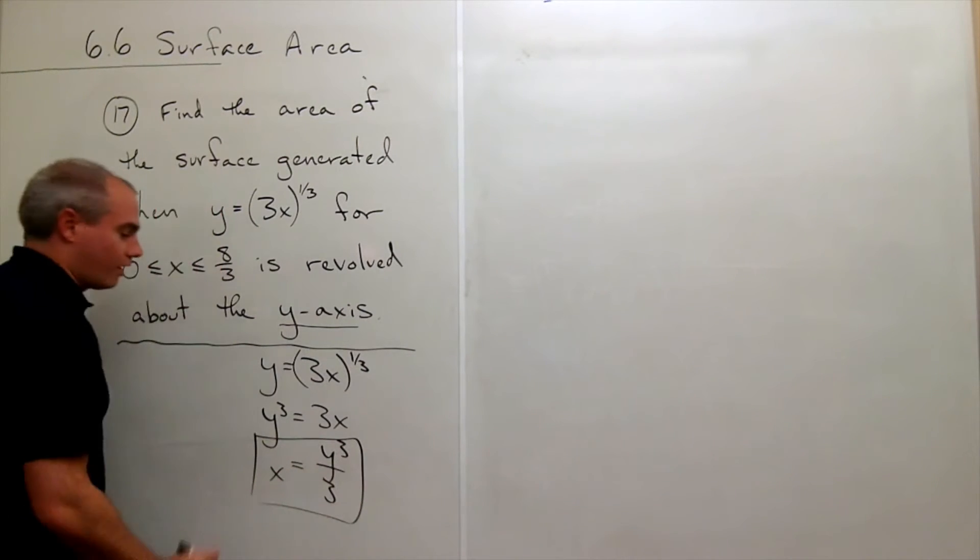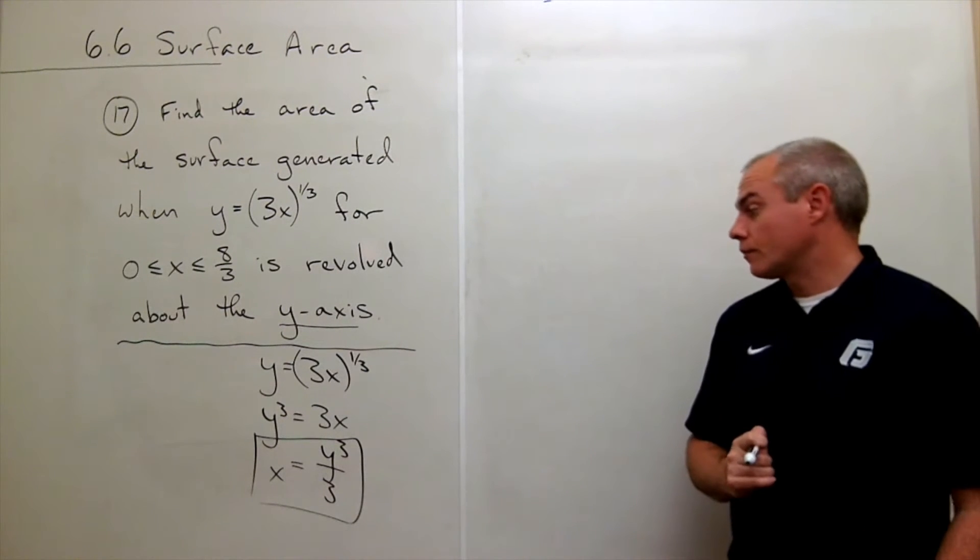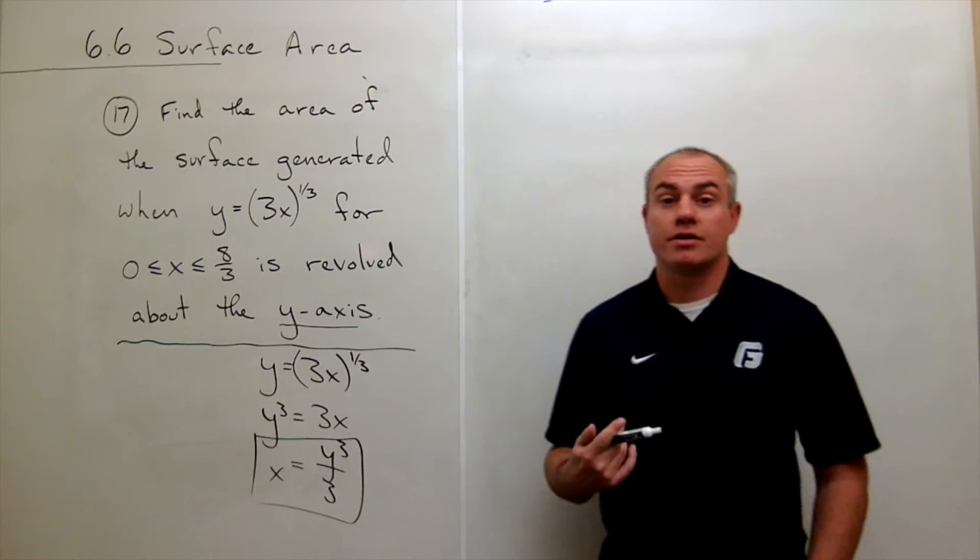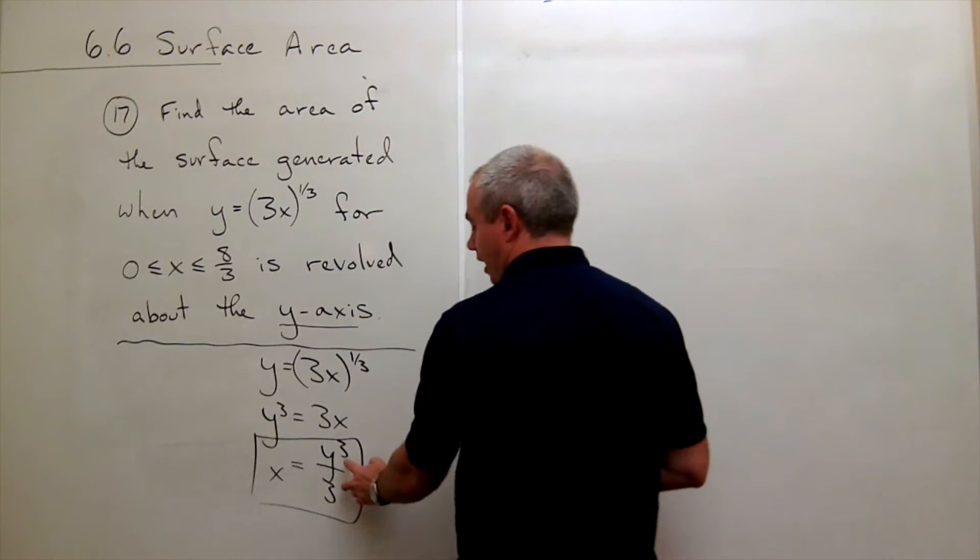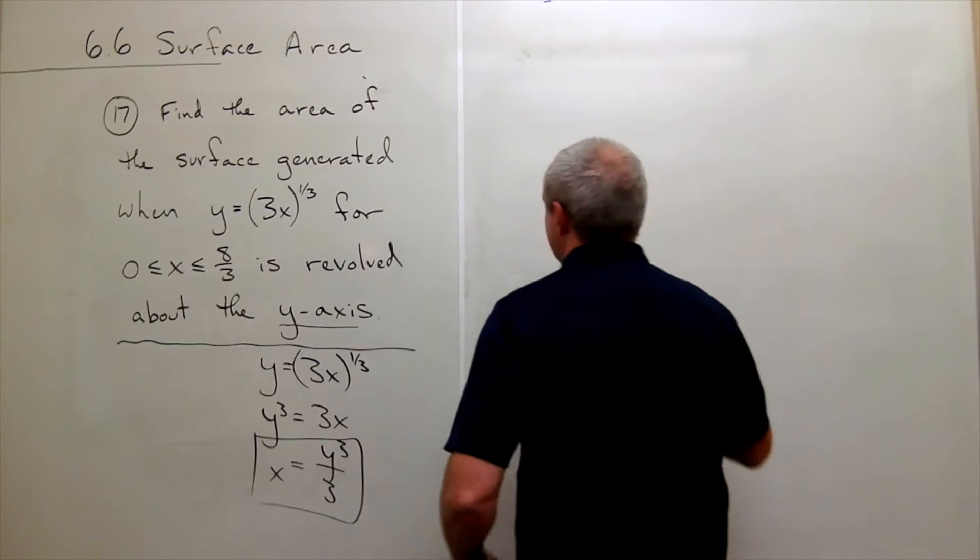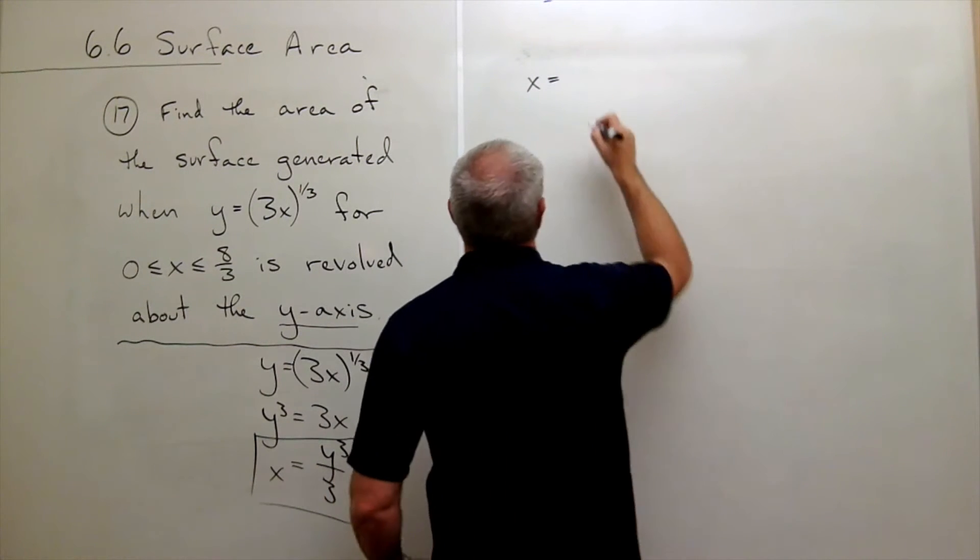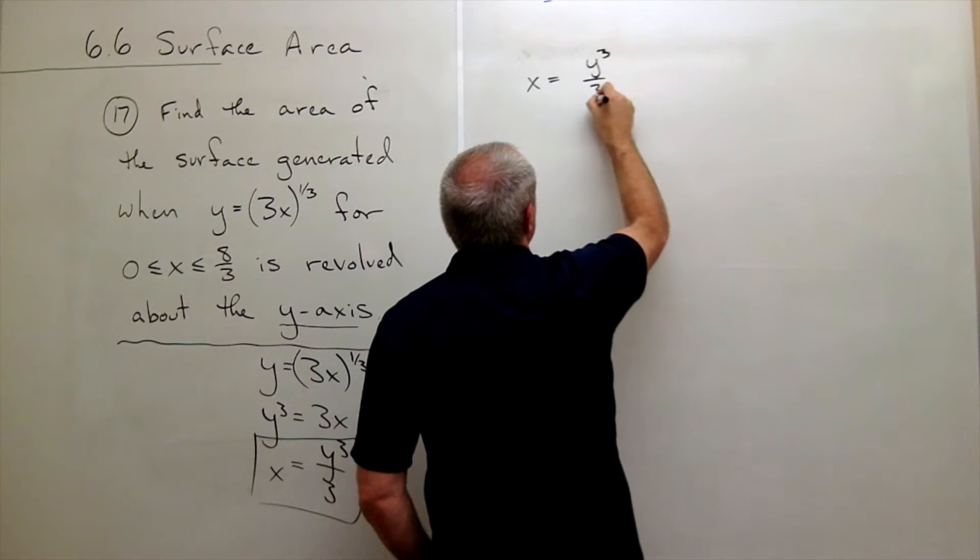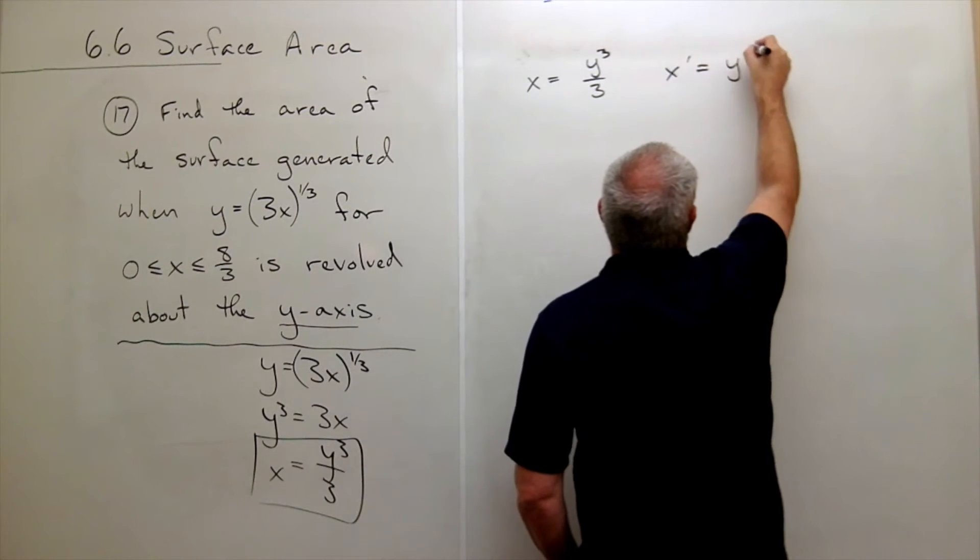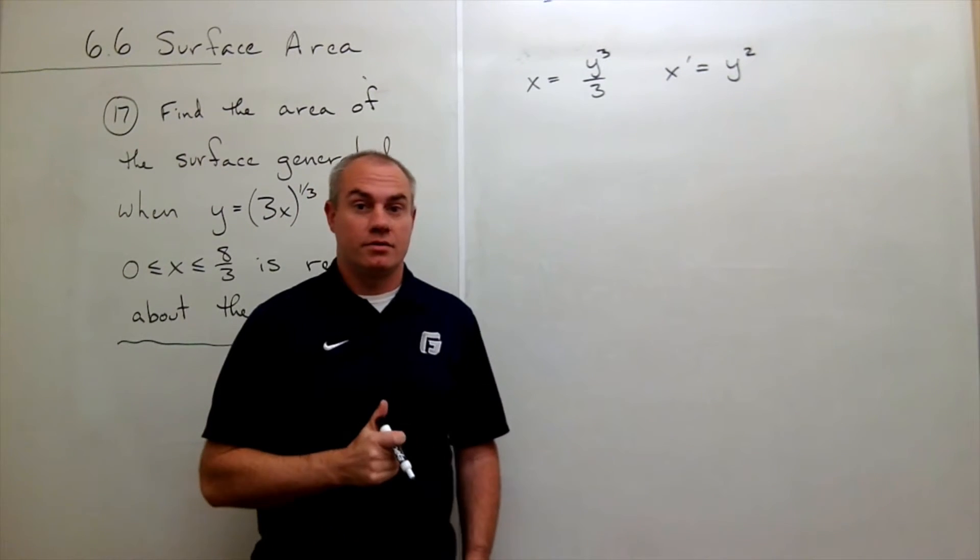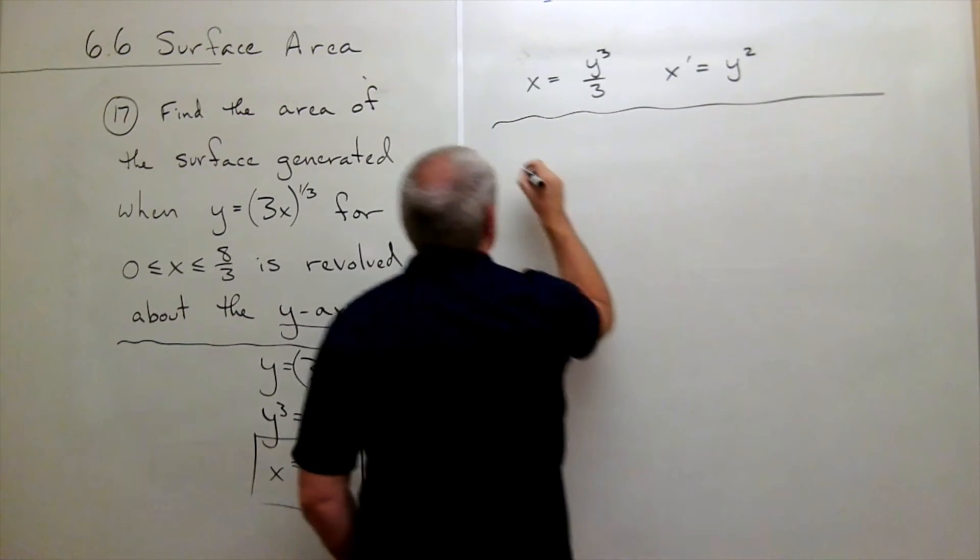So now we've got our function written as a function of y, and now we need to use our surface area formula. But to use the surface area formula, I also need a derivative function. So I know that my function x is equal to y cubed over 3, and that means that x prime is equal to just y squared.